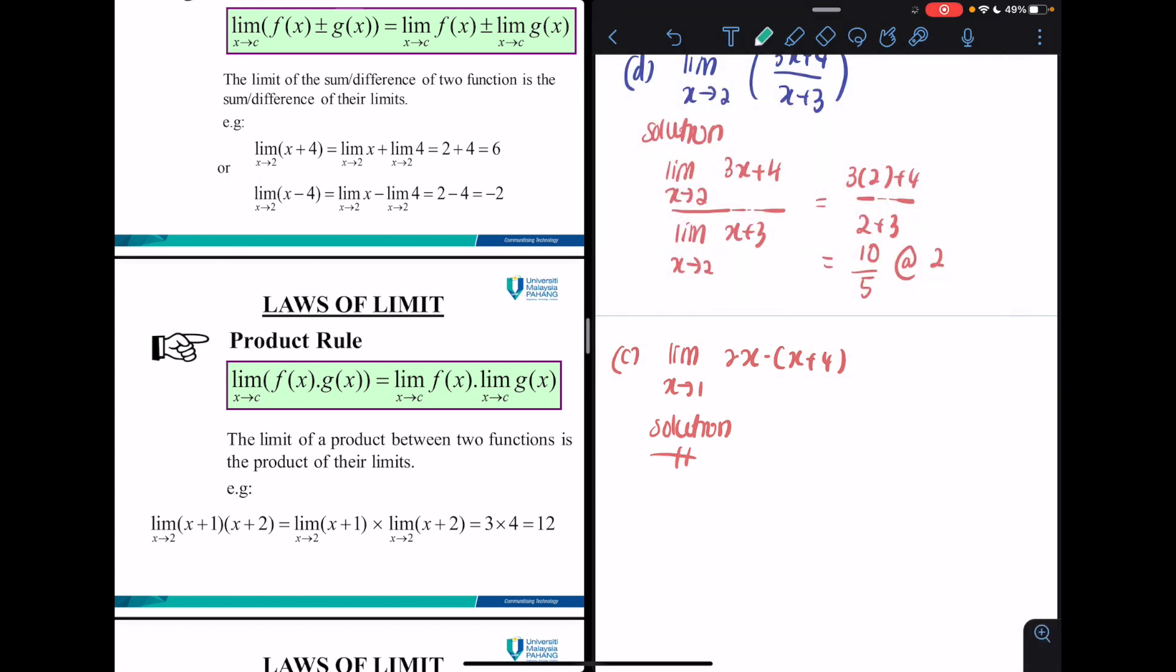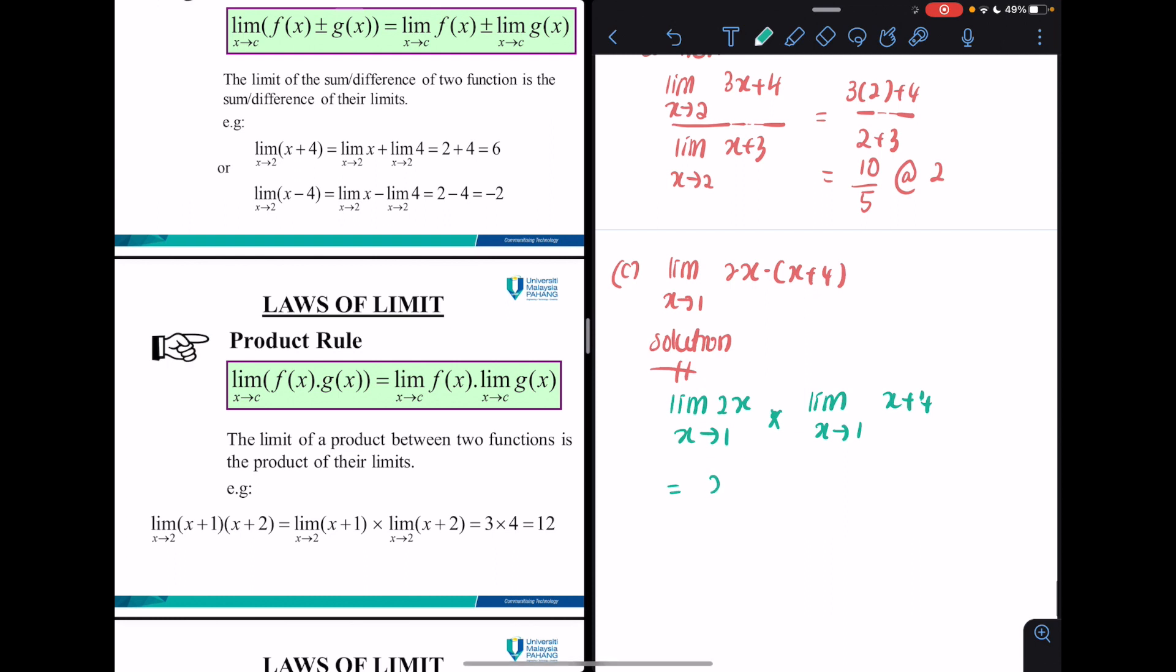You will get the limit for function 2x as x approaching 1, times limit as x approaching 1 for x plus 4. I will get 2 times 5, which is 10.